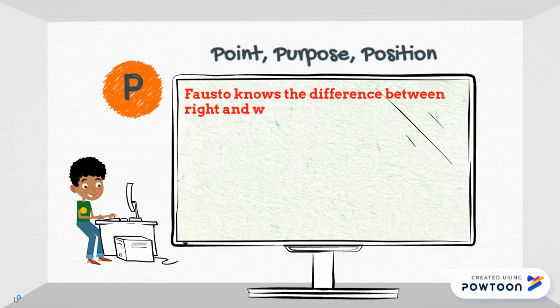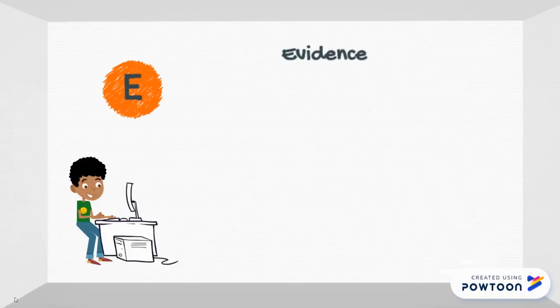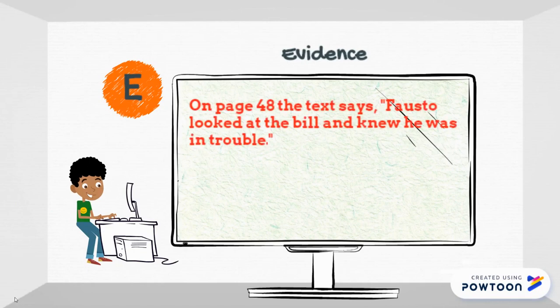Now I need to back it up with my evidence. How do I know that? Well, on page 48, the text says, Fausto looked at the bill and knew he was in trouble. And then he said, oh man, I shouldn't have lied.